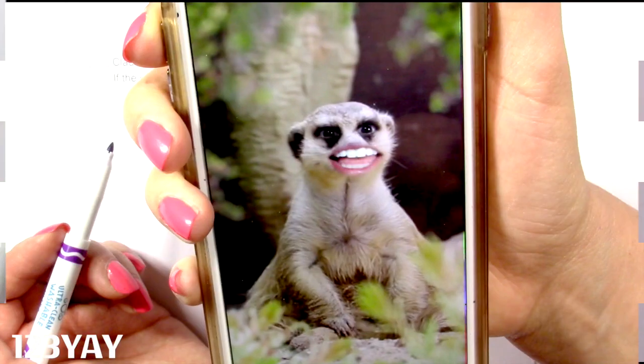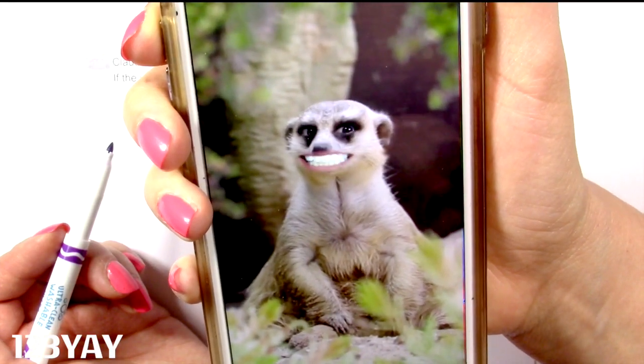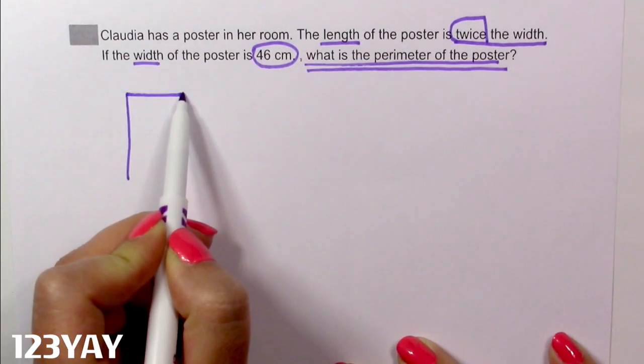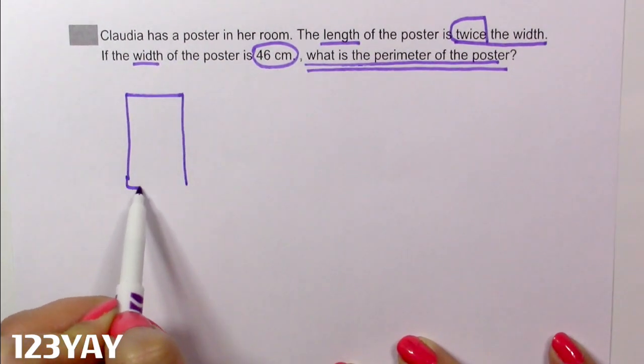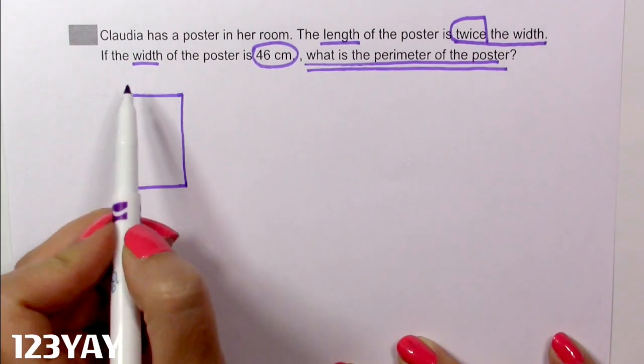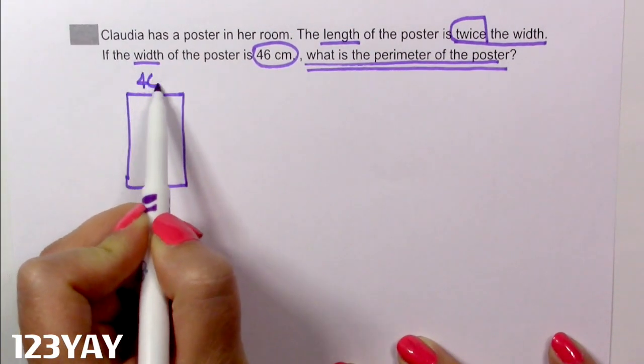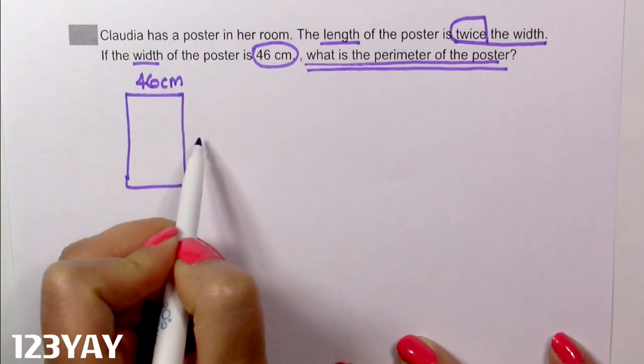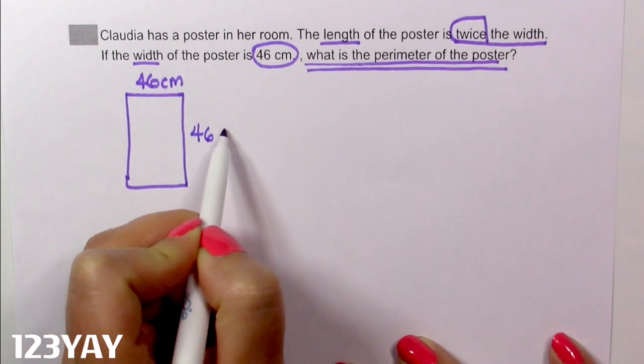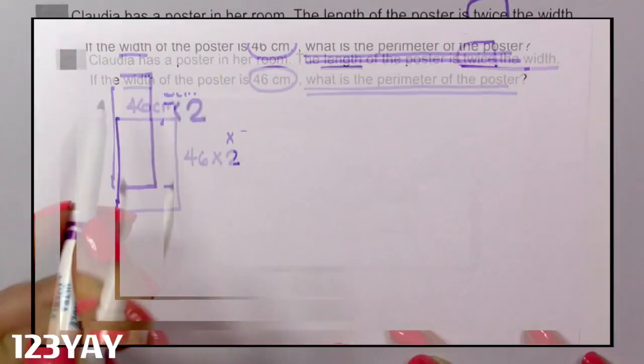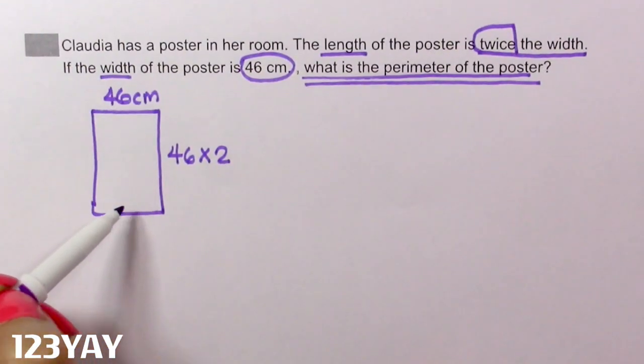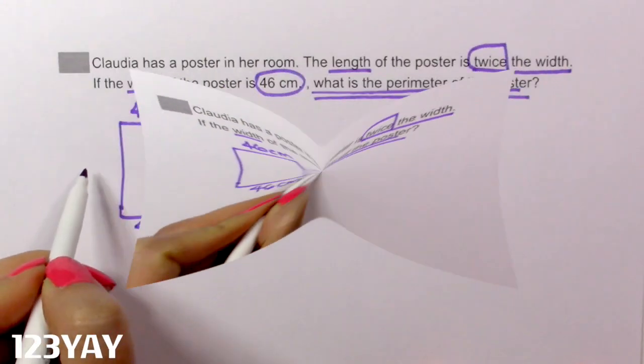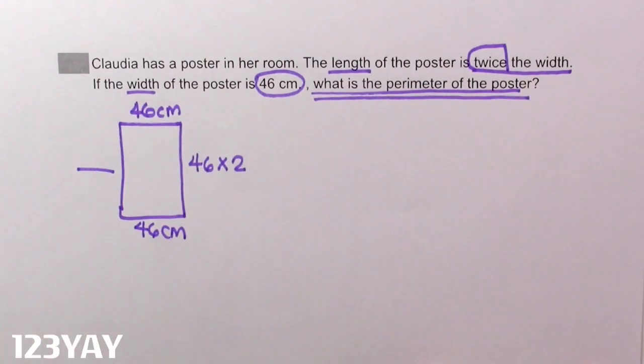What do we do next? Draw a model. Let's draw a model. Here's a poster. And we know that the width is 46 centimeters. And the length is twice the width, which means 46 times 2. If this is 46, guys, in a rectangle, this will also be 46 centimeters. And we have to know what is the length.